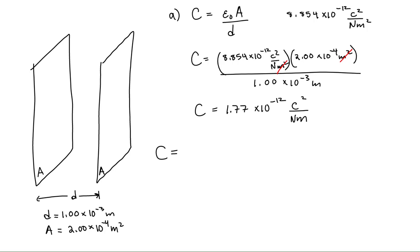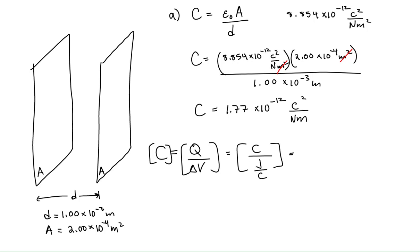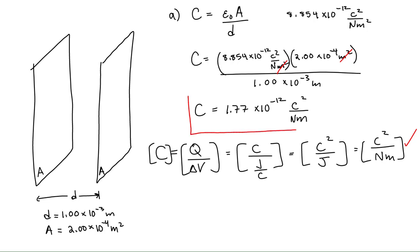Starting with the definition of capacitance as the ratio of charge to potential difference, the units of charge are coulombs and the unit of volt is joules per coulomb. This gives us coulombs squared over joules, and since a joule is a newton meter, our units check out. So the capacitance of this parallel plate capacitor is equal to 1.77 times 10 to the minus 12 coulombs squared per newton meter — which is a farad.